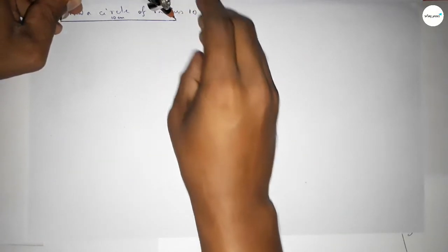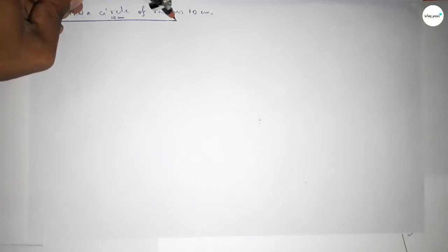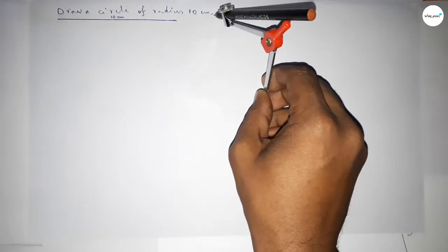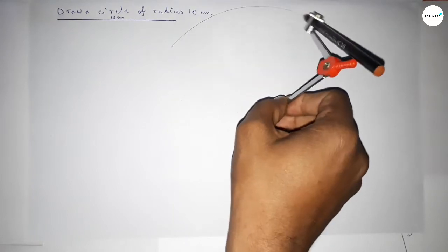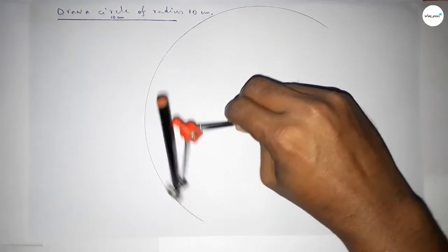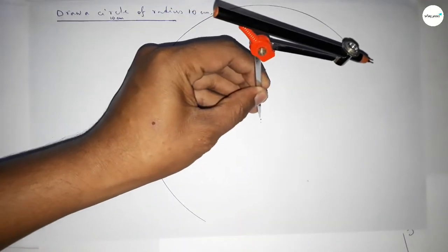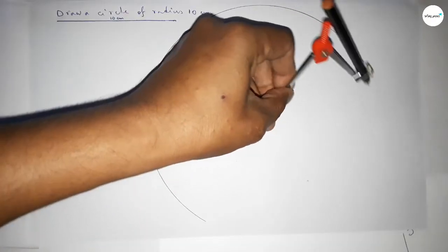Next, taking the length 10 centimeters by using a compass. Now putting the compass on the point, we have to draw an arc this way. With the same length, putting the compass here and continue to draw the arc.